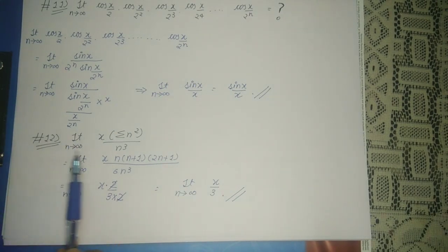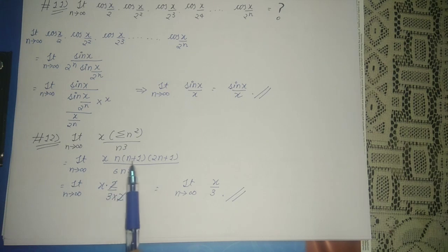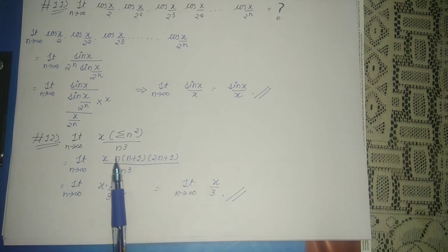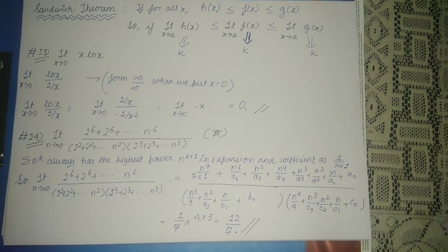Now let's see another question: limit n tending to infinity of x · (Σn²) / n³. The summation of n² equals 1² + 2² + 3² + ... + n², which can be written as n(n+1)(2n+1)/6. So we write: limit n tending to infinity of x · n(n+1)(2n+1) / (6n³). Collecting the n³ coefficient, the numerator coefficient comes out as 2 and the denominator coefficient as 6, so the value comes out to be x/3.